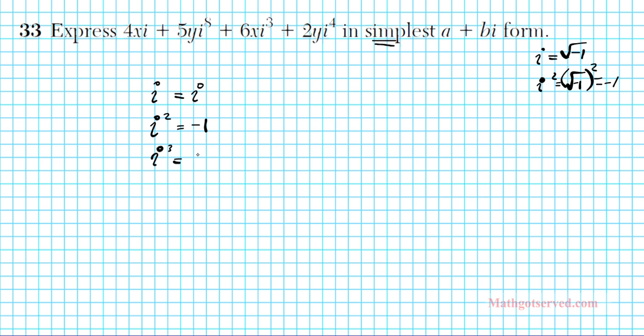i times negative 1 is negative i. And then i to the fourth is i square times itself, i square times itself or i times i to the third. Whichever way you do it, you're going to end up with positive 1. Now if you have these four memorized, i, negative 1, negative i, and 1, you're good to go. So you see a pattern here. You have i and negative i, negative 1 and 1.